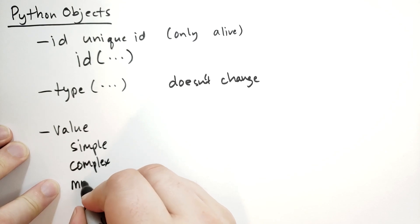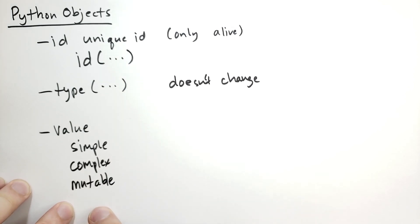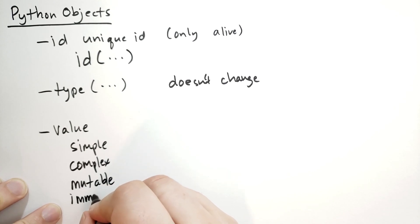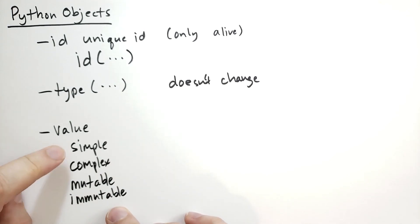Some values are mutable, meaning you can change the values during the life cycle of the object. We haven't run into any object quite like that yet, but they do exist and we're going to cover them eventually. And some of them are immutable, meaning they can't change. So all the objects that we've seen so far are immutable, they're simple.